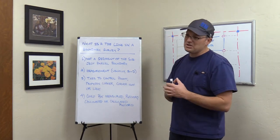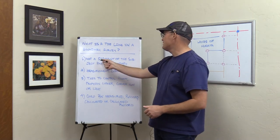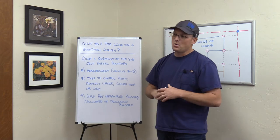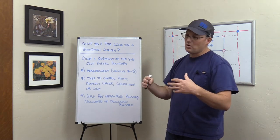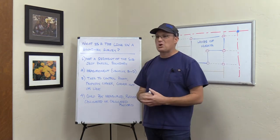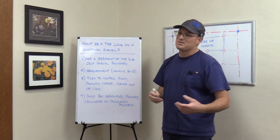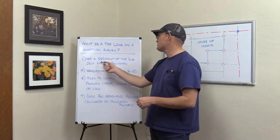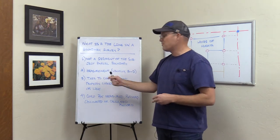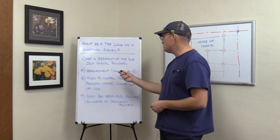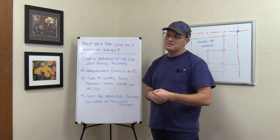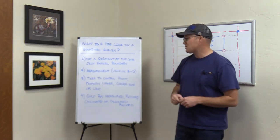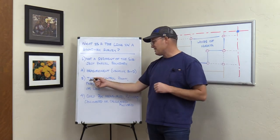It's kind of odd, but I start the definition with what a tie line is not. A tie line is not a segment of the subject parcel boundary. So if a line — a curve or a line — is a segment of the boundary of the parcel that you're surveying, then in my shop it's not a tie line; it is a line of the subject parcel. That's number one. Number two, the line represents some kind of measurement — usually a bearing and a distance. It could be only a distance or only a bearing, but it's usually bearing and distance.